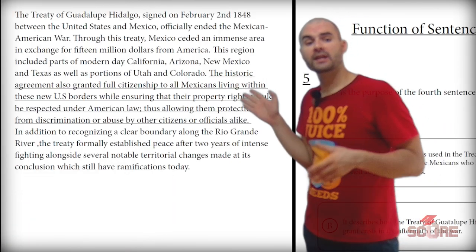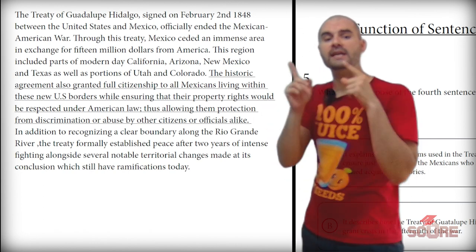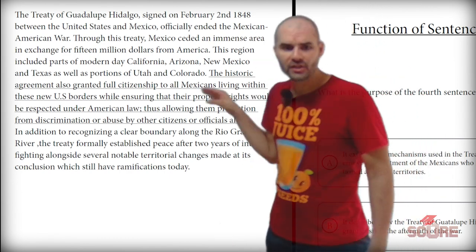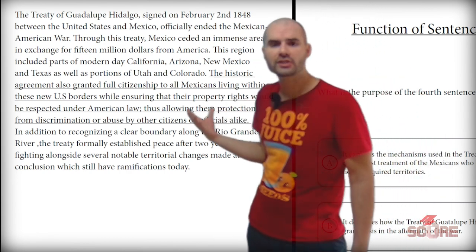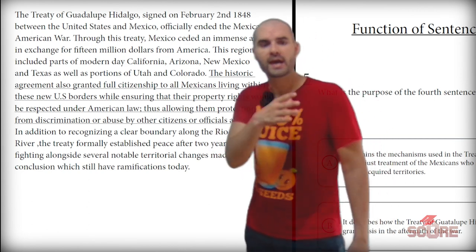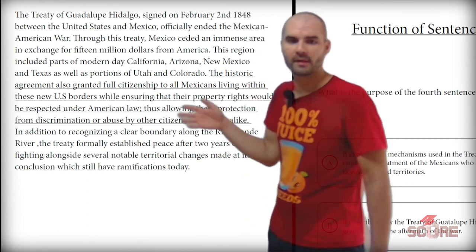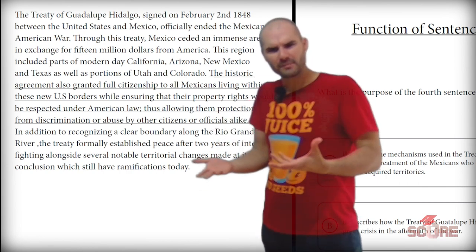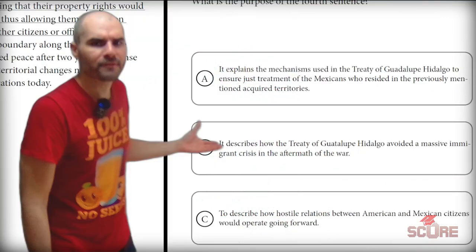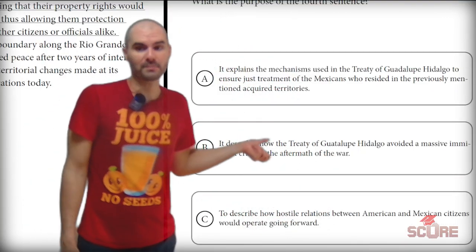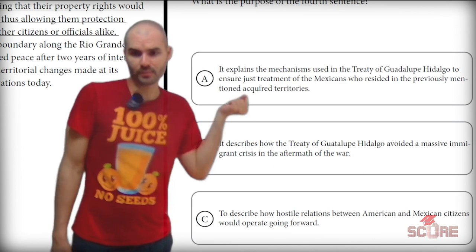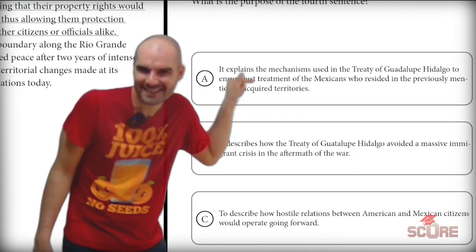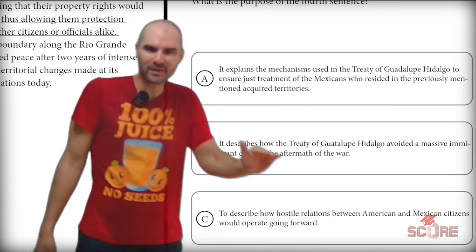Number five: 'The Treaty of Guadalupe Hidalgo, signed on February 2nd, 1848, between the United States and Mexico officially ended the Mexican-American War.' The underlined sentence says: 'The historic agreement also granted full citizenship to all Mexicans living within these new U.S. borders, ensuring their property rights would be respected.' So it's describing the specific policies or mechanisms used in this agreement. The very first answer choice says it explains the mechanisms used in the treaty to ensure just treatment of Mexicans who resided in the acquired territories. That is 100% the right answer — exactly what we just saw. No need to read the rest. The answer is A.